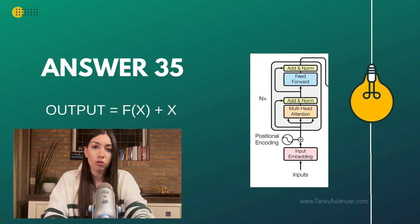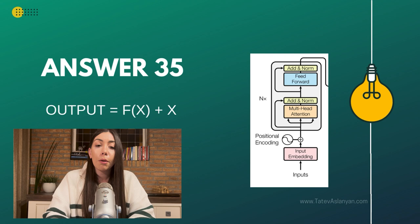With residual connections, we have the output equal to f(x), which is the transformation — the output of that layer — plus the actual x, which is the input.